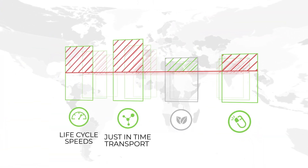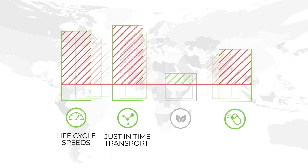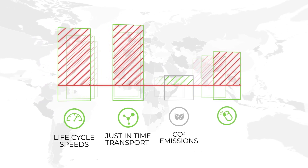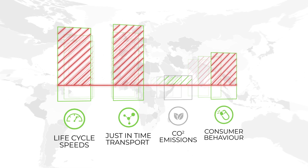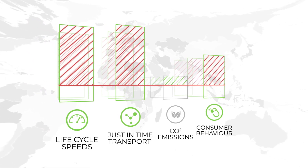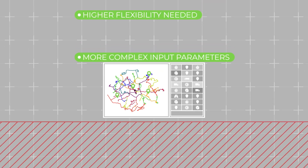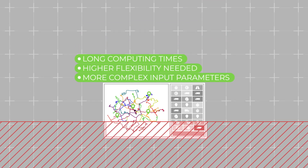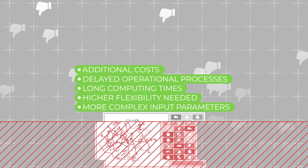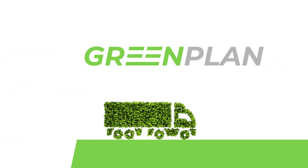Consumer behavior demands for same-day and time-window deliveries. Shorter product life cycles require fast and just-in-time transportation. Climate change demands CO2-efficient solutions. Existing planning tools simply can't cope with these challenges, which leads to rising customer dissatisfaction.